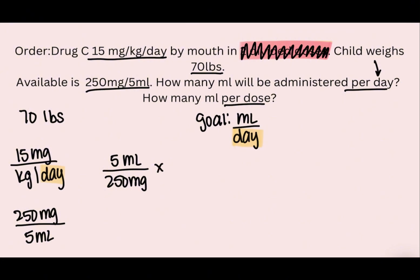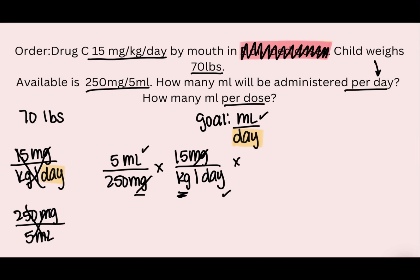We'll start with what we're looking for — milliliters on top — so five milliliters over 250 milligrams. We need milligrams on the bottom, so the 15 milligrams goes on top so the milligrams cancel out. Now we have milliliters on top and day on the bottom, just like the goal. The only thing left is kilograms, so we do a kilogram-to-pound conversion: one kilogram equals 2.2 pounds, and kilograms cancel out.